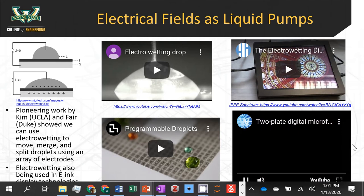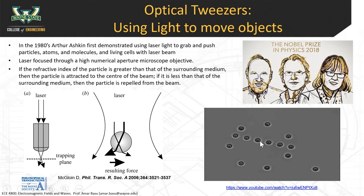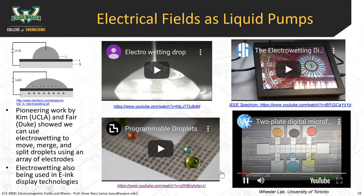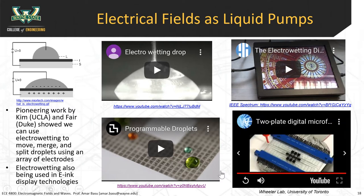Sophisticated protocols can be performed with these technologies. Electrowetting was developed by Professors Kim and Fair at UCLA and Duke, and pioneering biotech work was done by Aaron Wheeler's lab at the University of Toronto, who showed you can mix and merge droplets with biological samples like DNA and proteins. So the basic steps you'd do in a biology lab — pipetting and mixing — can be done using these electrostatic fields.